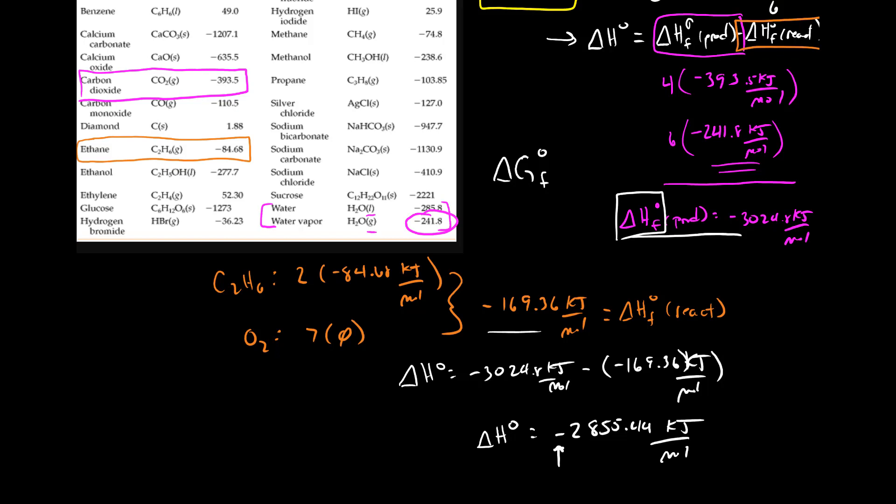And in tables you'll also find what's called S not. So this is the standard molar entropy. And you can use the standard molar entropy in exactly the same way as we saw for delta H or you can use for delta G.